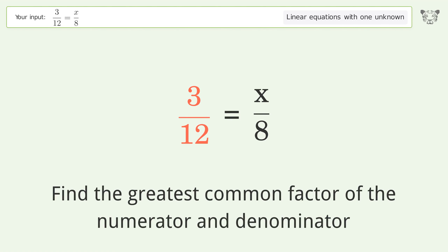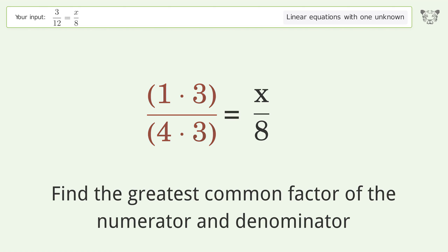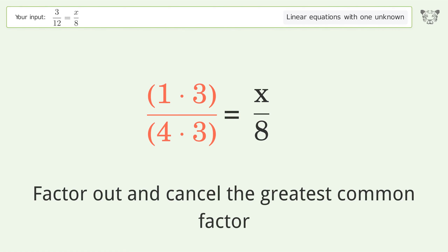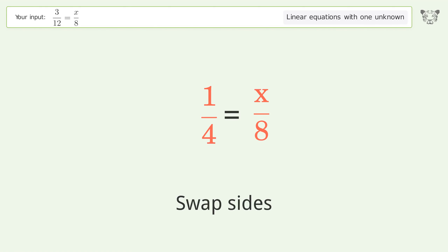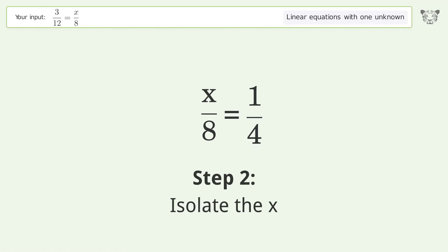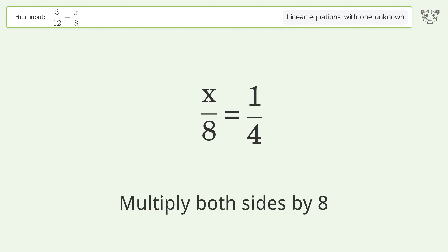Find the greatest common factor of the numerator and denominator. Factor out and cancel the greatest common factor. Swap sides, then isolate the x by multiplying both sides by 8.